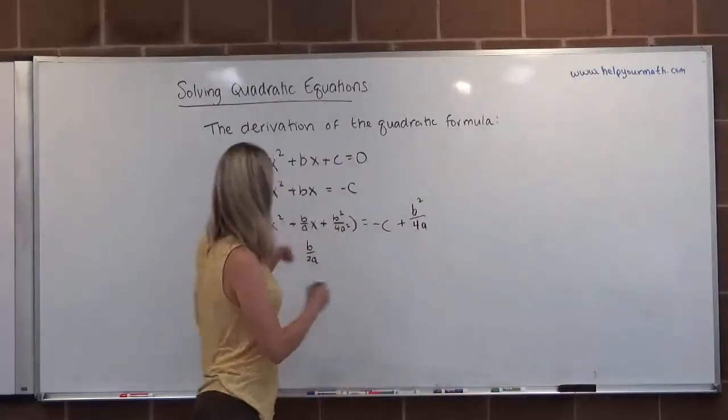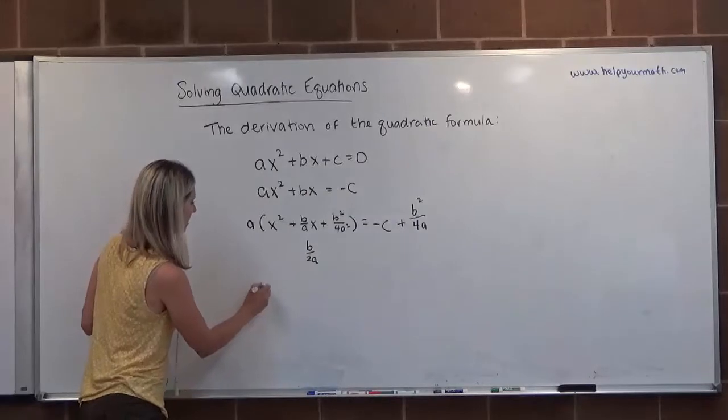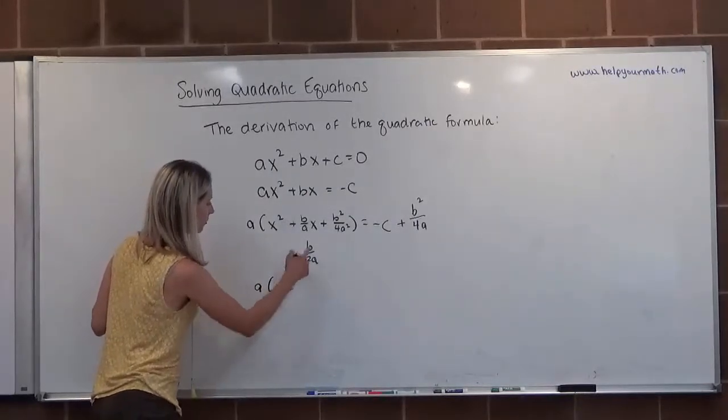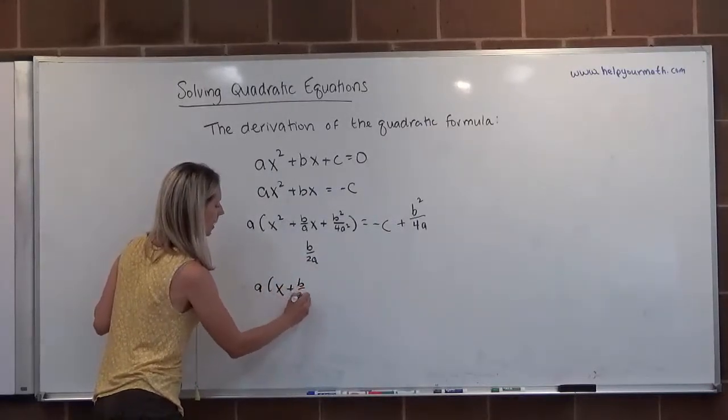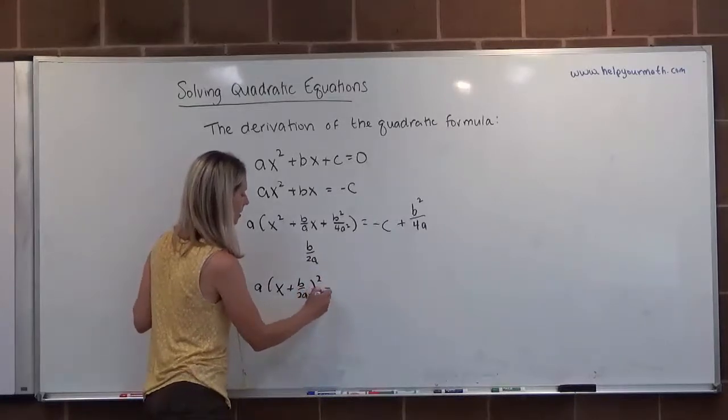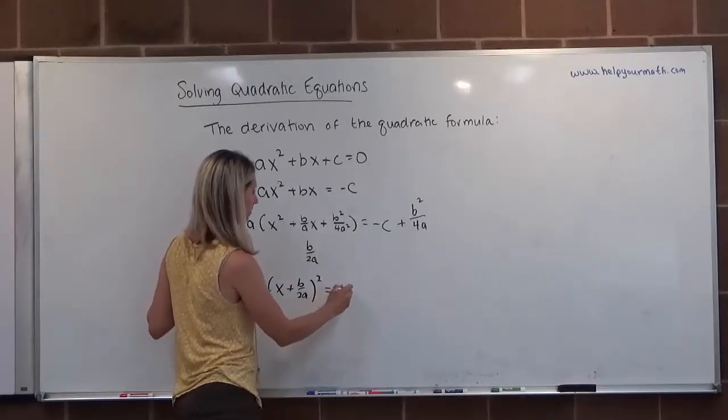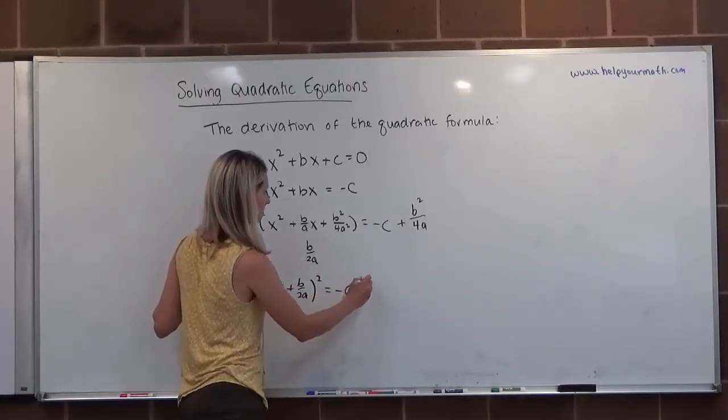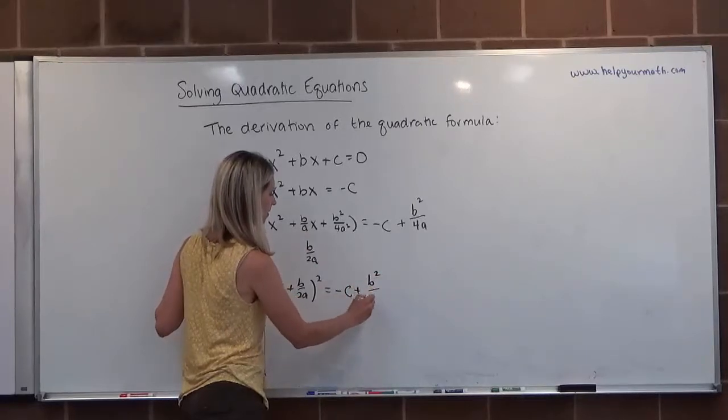Now from here, I'm going to write this. This will be a times x plus the root b over 2a squared equals negative c plus b squared over 4a.